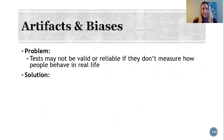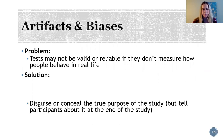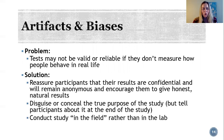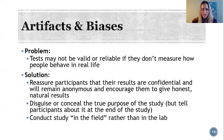The test may not be valid or reliable if the study doesn't measure how people respond in real life situations. Some solutions include hiding the true purpose of the study — though we must tell participants about it afterwards, which we'll discuss in the context of research ethics. We might also reassure participants that results are confidential and anonymous, encouraging honest natural responses. Finally, we might avoid these problems by conducting the study in real-life field settings rather than in the lab.